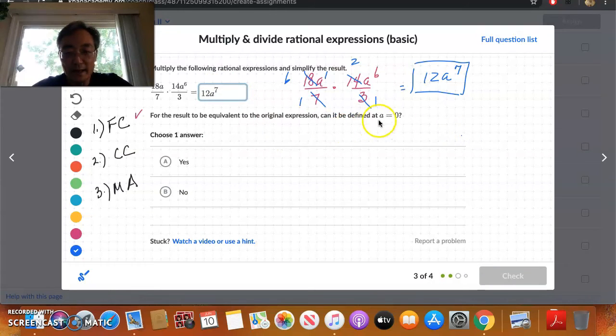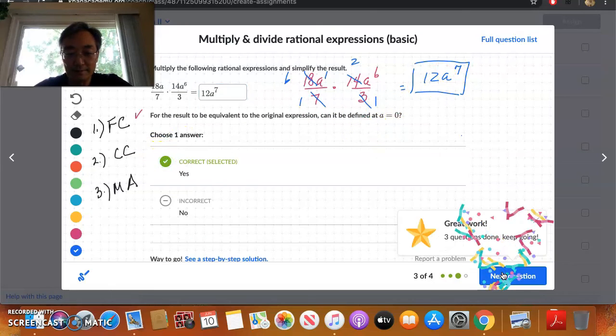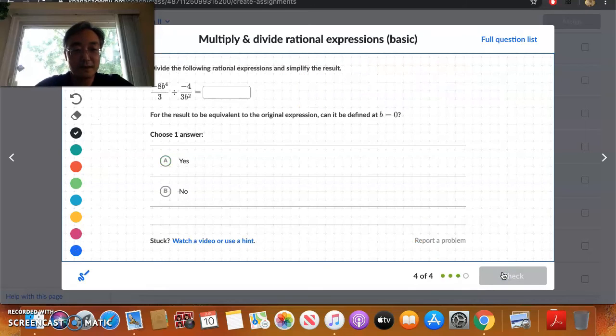And so our final answer is 12a to the 7th. Again, can a ever be equal to 0? Again, in the original, there were no a's in the denominator. So we're good. And even in the simplified forms, there are no a's. Yes. Absolutely.